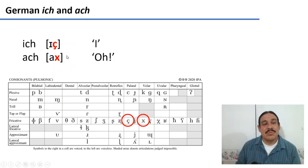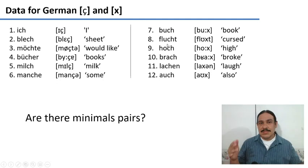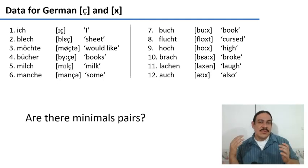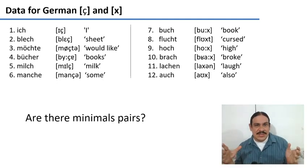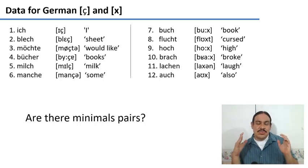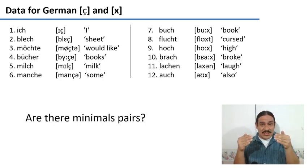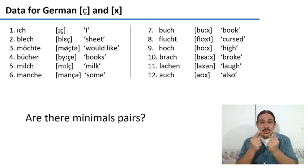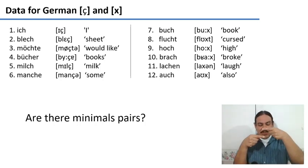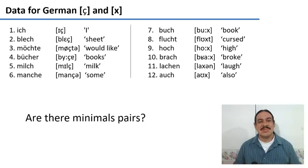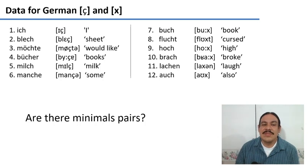So, let's say we want to figure out what is the relationship between these two sounds, and we manage to get some data for German. The first thing we need to figure out whenever we see phonological data is to try to find minimal pairs. Do these two sounds have any minimal pairs? A minimal pair is two words where the only difference is that they have one sound or the other — they're different by only one sound.